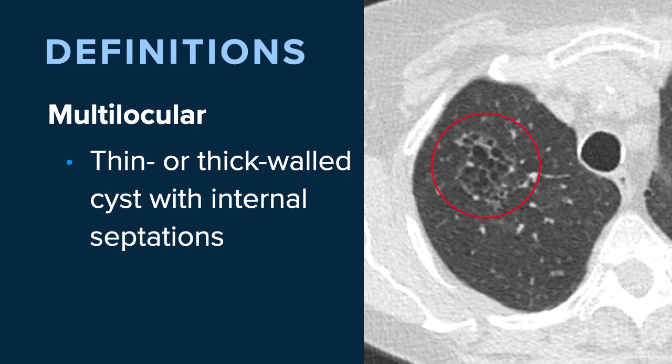Multilocular cysts — thin or thick-walled cysts that have internal septations are considered to be multilocular. You may have one or two septations, or as we see in this example, there are numerous or multiple septations. These are complex lesions and are more suspicious at lung cancer screening.